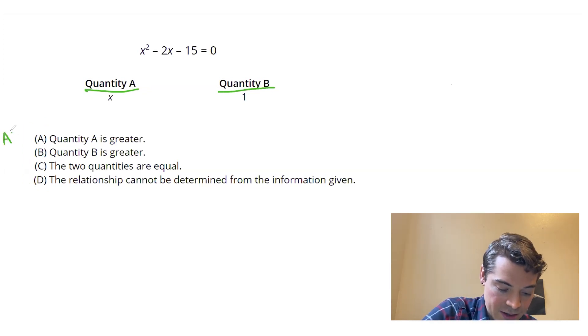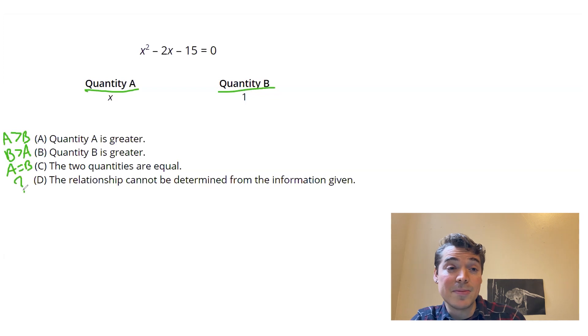So choice A means that quantity A is bigger. Choice B means that quantity B is bigger. Choice C means the two quantities are equal. And choice D means that pretty much more than one of the above is possible. There's not a consistent relationship there.